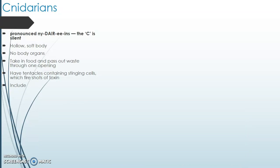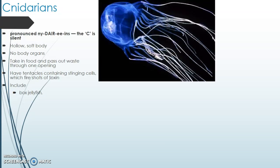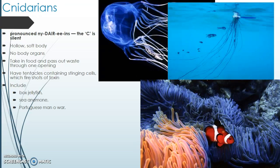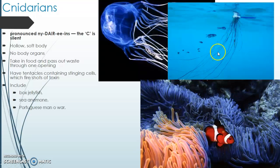These Cnidarians include things like box jellyfish — these guys have very nasty venom in their stinging cells — sea anemones, or Nemo's home, something called a Portuguese man-of-war, which is a very scary jellyfish because it has really long tentacles that can stretch a long, long way, so they can catch lots and lots of fish and just drift across the ocean.